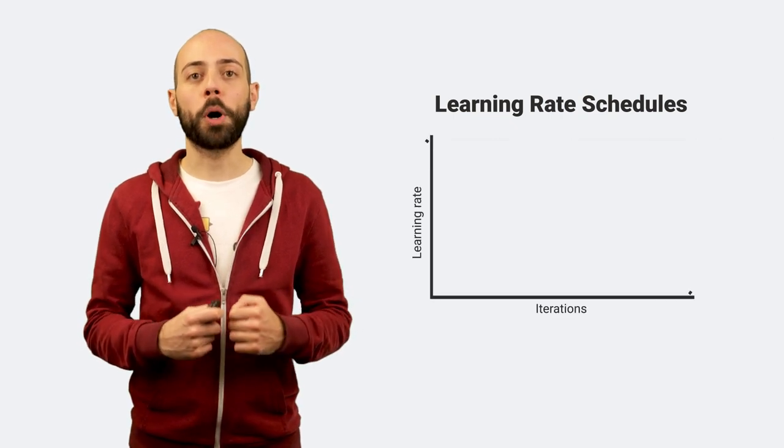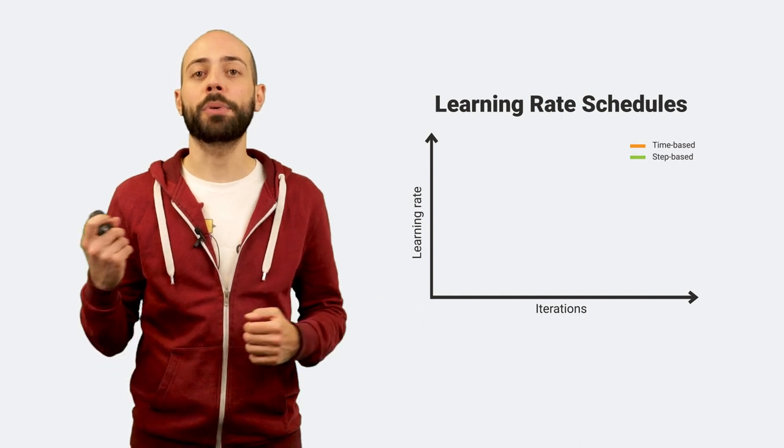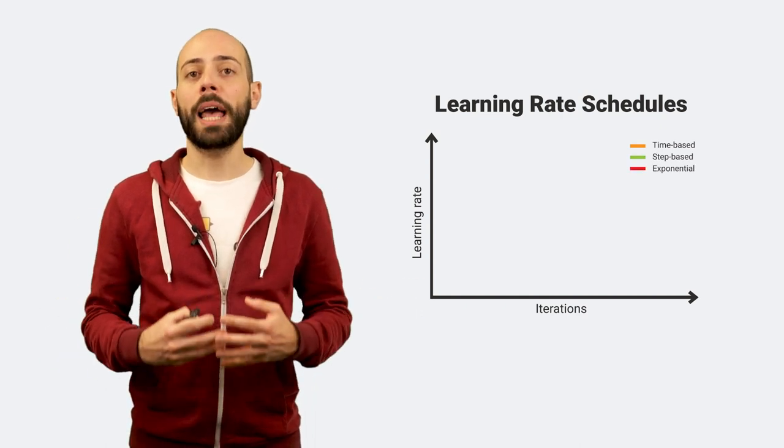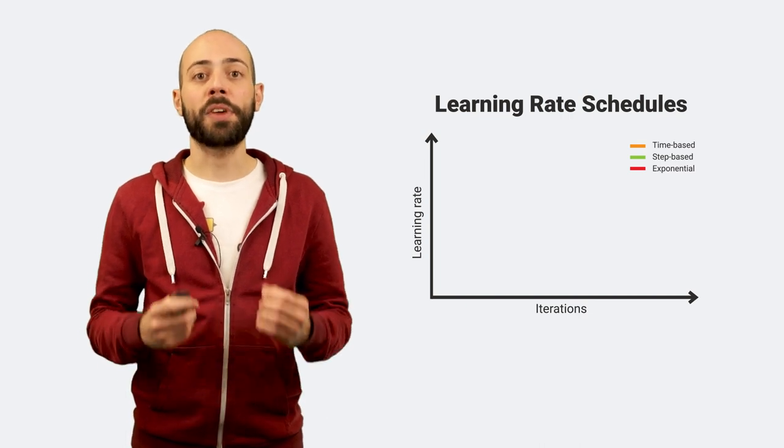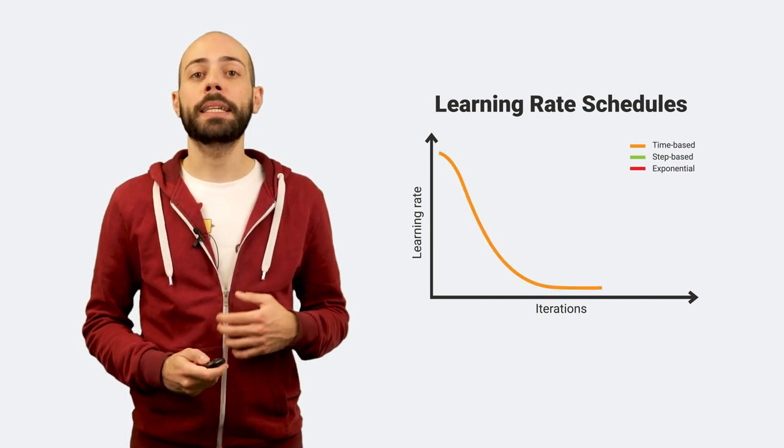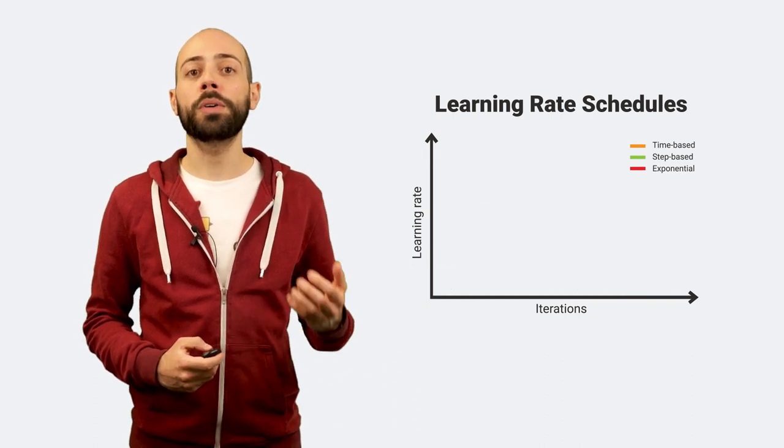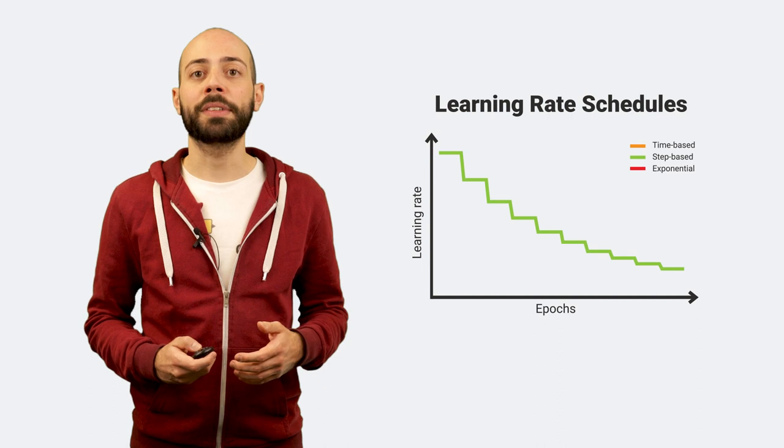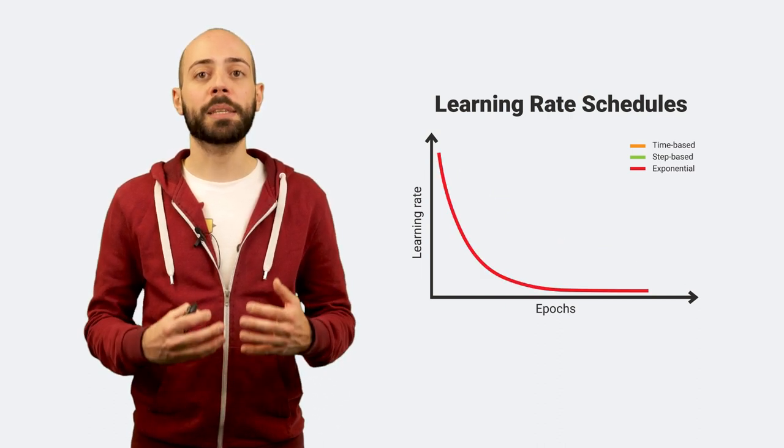The most popular learning rate schedules are time-based, step-based, and exponential. They all have in common the selection of an initial learning rate that is gradually reduced, depending on the learning rate of the previous time iterations, or according to a predefined factor after a specific number of epochs, or using a decreasing exponential function.